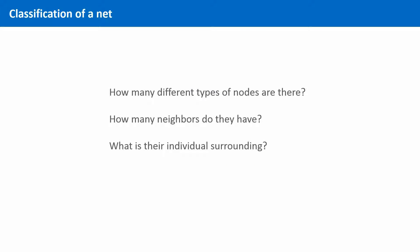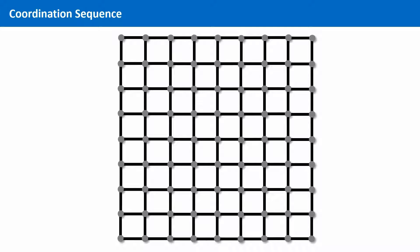And the second question is also not so difficult. The neighborhood of a node can be expressed as a so-called coordination sequence. The coordination sequence is determined as follows.